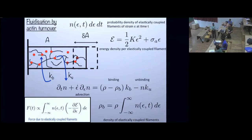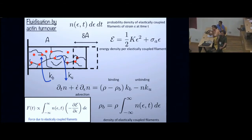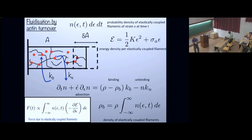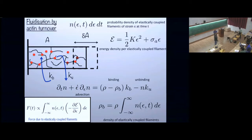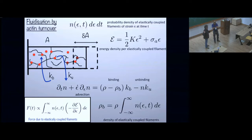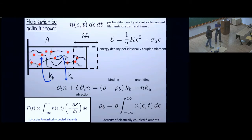Regarding strain-dependent unbinding and ATP: we do have a strain-dependent unbinding in the model. The velocities of the motors also depend on ATP concentration, and one could assume ATP concentration is fixed, which gives a saturating behavior consistent with molecular motor behavior. No one has done the experiment of flushing the system with ATP and looking at whether pulsation would cease or not — that would be interesting, though of course this is all in an egg, which is different from single-cell manipulation.